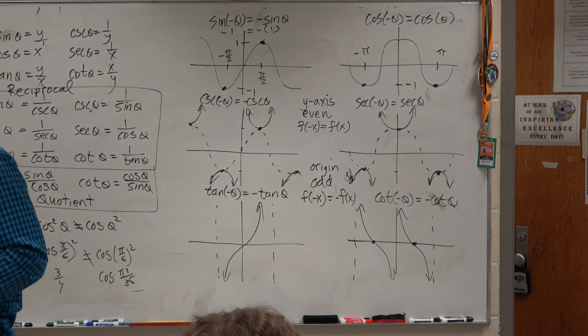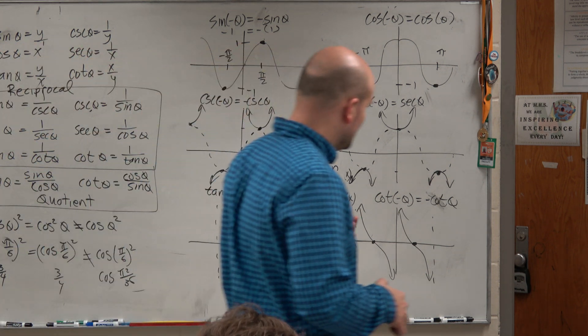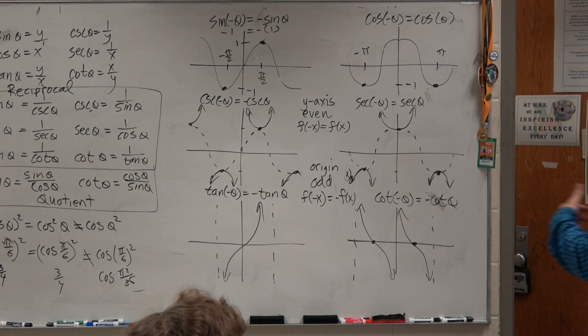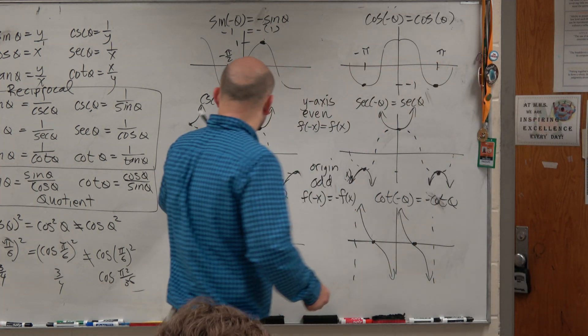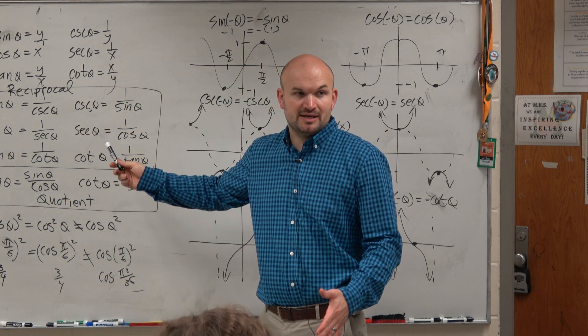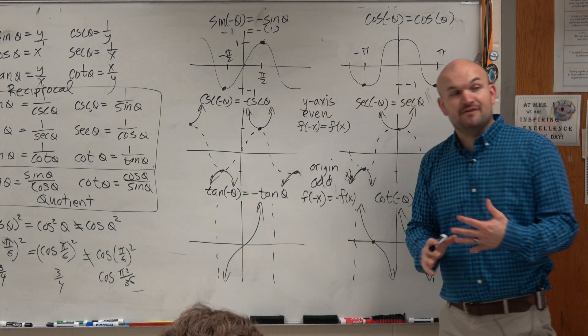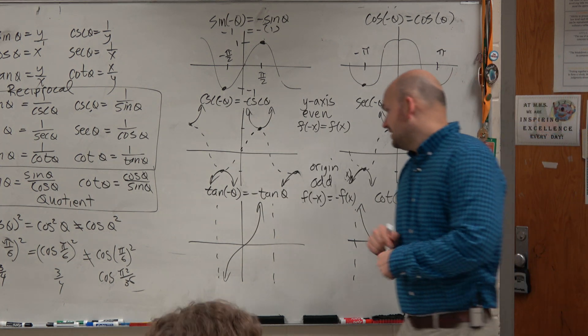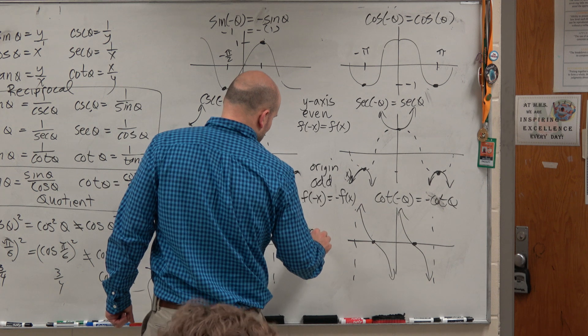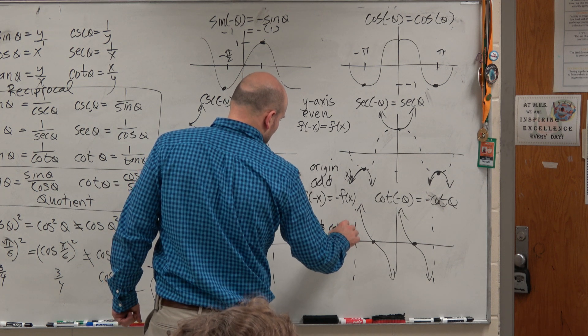You OK? Yeah. OK. So what you guys can see here is these are identities. Basically, one is equal to the other, just like over here. Right? Cosecant is equal to 1 over sine. Like, these are the same thing. But these are based on a function being even or odd. Hence, their name, the even and odd identities.